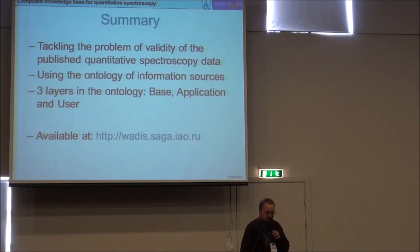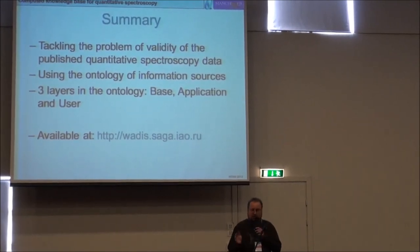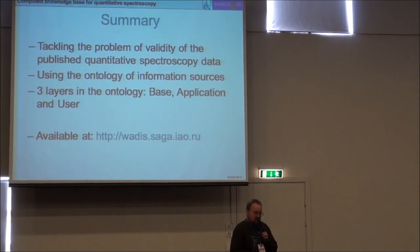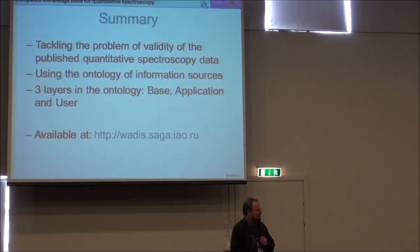So, that's more or less it. Just to summarize what we've done. We are tackling the problem of validity of the data which is published, quantitative data which is published somewhere. We are using the ontology of information sources to do so. And this ontology contains three layers. The base layer, which describes the area, which sets up the vocabulary of the domain area. The application one, which contains the data, annotation of the data which is in the system in a way that ontology could use. And the user ontology, which actually responds to the query, using the query to the data. And the system is available, so please feel free to try it. Thank you.